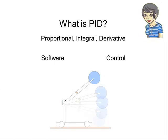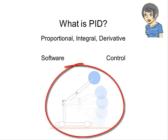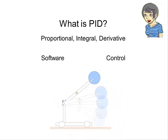So let's start. What is PID? PID stands for Proportional Integral Derivative. We will go into what those mean later. For now, know that PID is a software solution for controlling a system. Here's an example of a robot arm that we can control using PID. We want to raise the arm to a certain position, regardless of how much weight it's carrying.